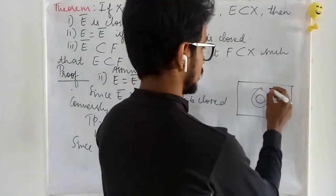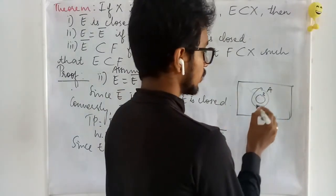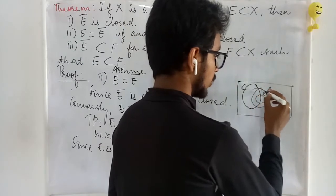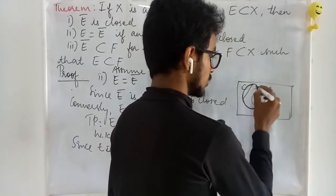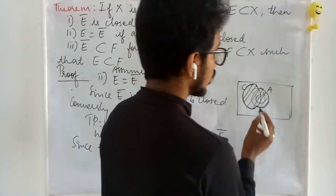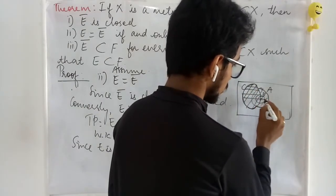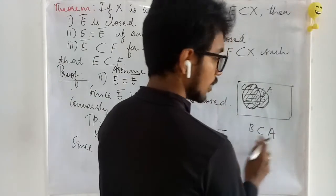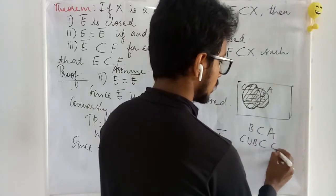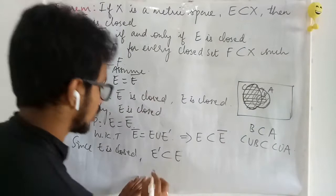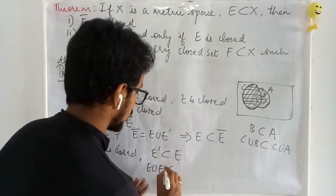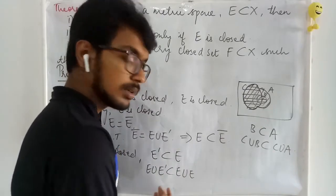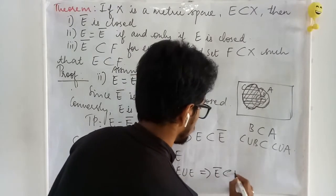Let me illustrate a basic set theory concept: if we have sets A and B, and B is contained in A, then for any set C, C union B is contained in C union A. We apply this by taking the union of E with both sides. Since E-prime is contained in E, we get E union E-prime is contained in E union E, which is E. So E-bar is contained in E.